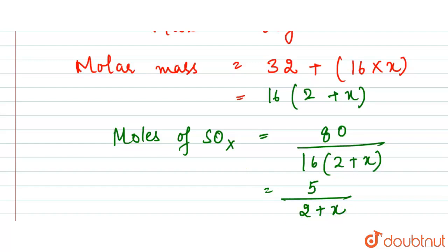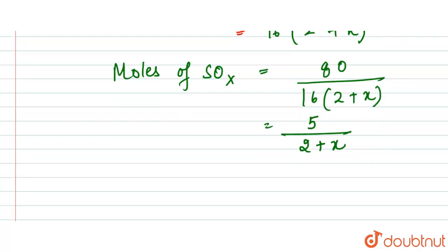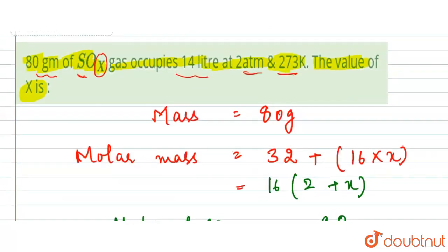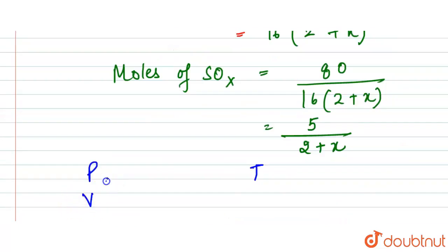So now we got this. Now here we are given the pressure, volume, and temperature. The pressure value is 2 atmospheres, temperature is 273 Kelvin.